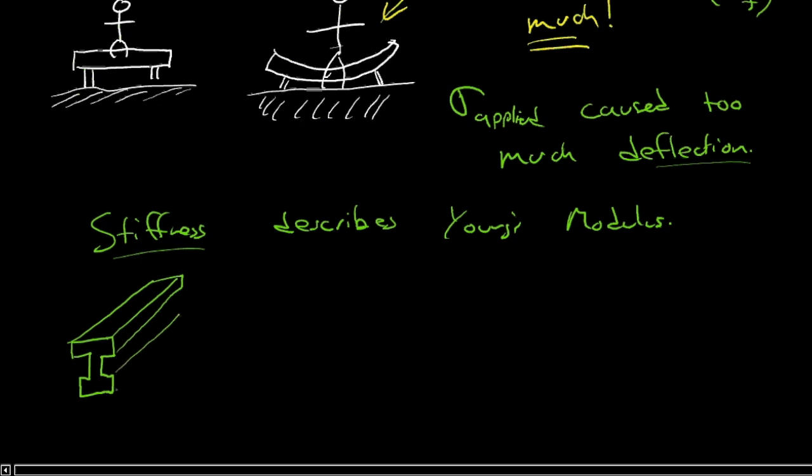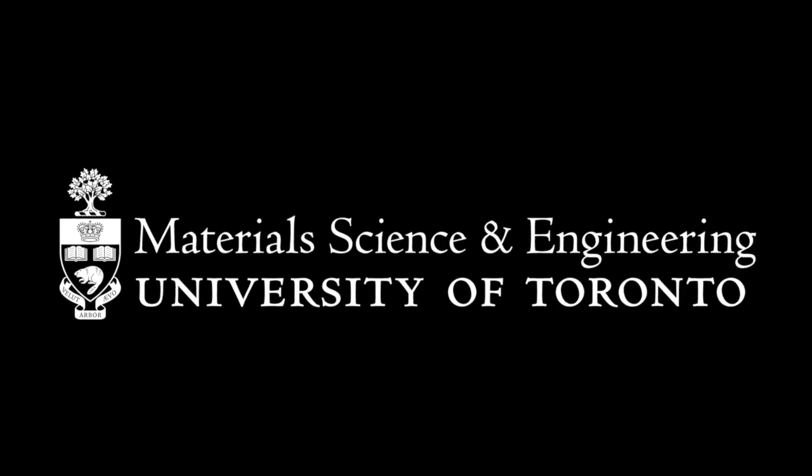An I-beam has this particular cross section to it and it's loaded in bending. The second moment of area is increased by having a lot of material far away from the neutral axis. Technically, stiffness is a function of the Young's modulus and the geometry. But if you're looking just for an intuitive word, stiffness comes pretty close to describing what Young's modulus is all about.